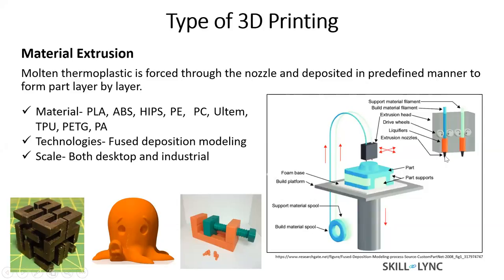When your extruder moves in the X-Y direction, controlled by motors, it forms one layer. Once the layer is completed, you move your platform in the Z direction downwards, then form the next layer on top of the previous layer. You continue making layers in the Z direction. This particular 3D printing process is also called fused deposition modeling or FDM, because you are essentially depositing your material in a fused or melted format. This is the most common method right now.